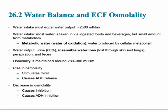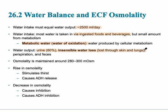When we talk about water balance and extracellular fluid osmolality, it's important to remember that water intake should equal water output — in versus out. Most water intake comes via foods and beverages, but there's a small amount from metabolism called metabolic water, or the water of oxidation. Water output should be about 60% urine, and then there's insensible water loss — water lost through the skin and lungs that we don't really notice.